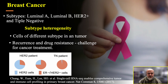Breast cancer can be classified into four major subtypes: luminal A, luminal B, HER2-enriched, and triple-negative.